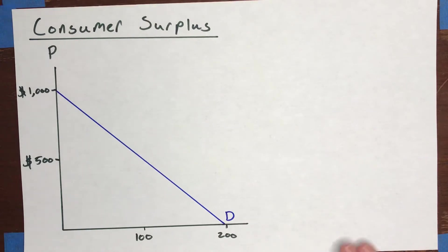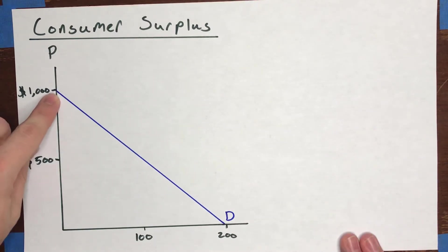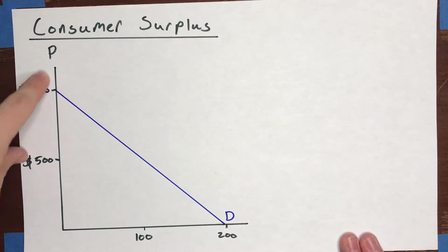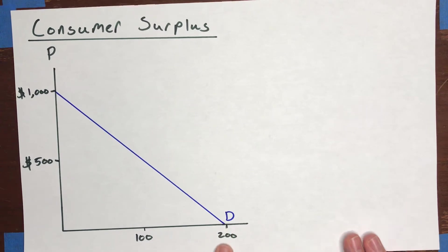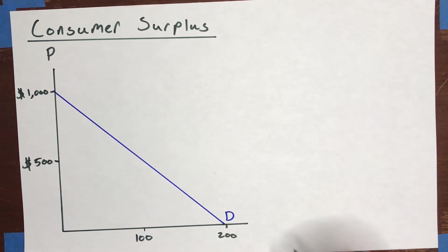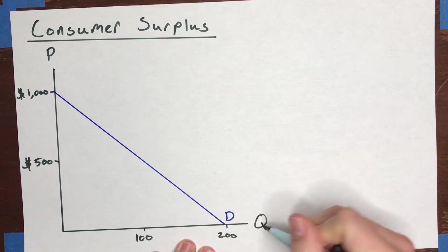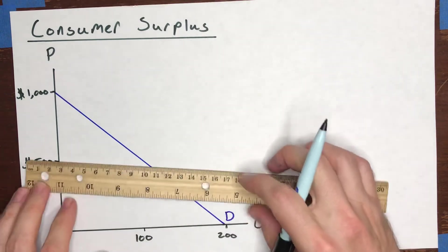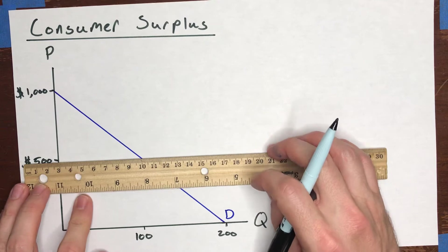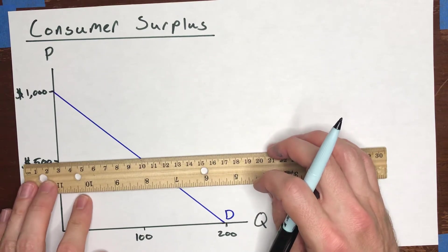Here I've got a market where the demand curve starts at 1,000 on the y-axis — the price axis — and it goes down to a price of zero which hits at a quantity of 200. Now suppose that in this market the seller charged a price of $500 per unit.